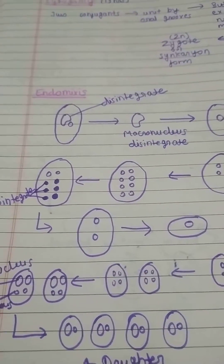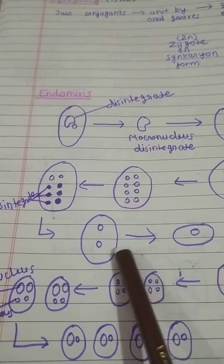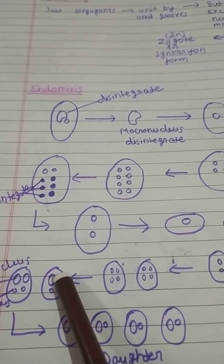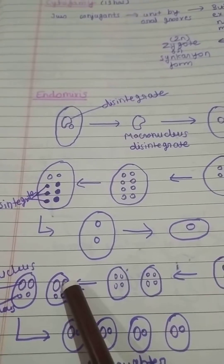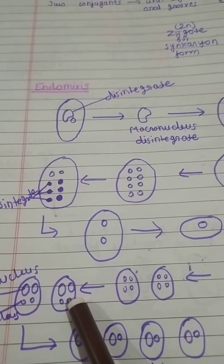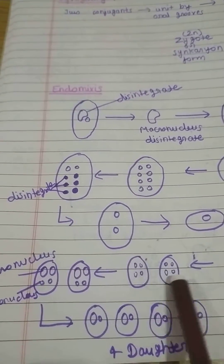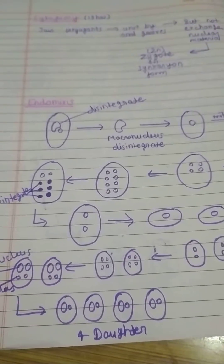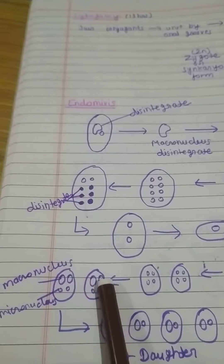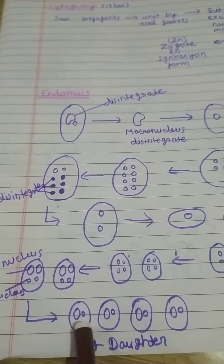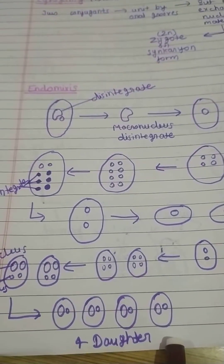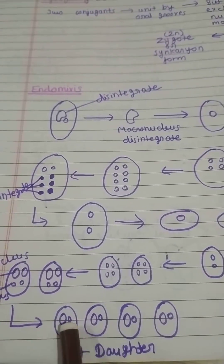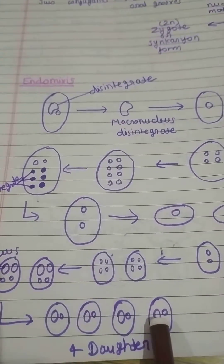After that, of the four micronuclei, two become micronuclei and two become macronuclei. They consist of two Paramecia, each having two micronuclei and two macronuclei. After mitotic division occurs, four daughter Paramecia are formed, each consisting of one micronucleus and one macronucleus. This process is known as endomixis.